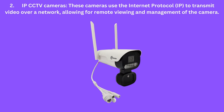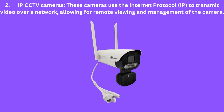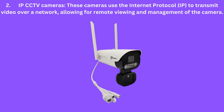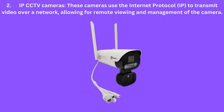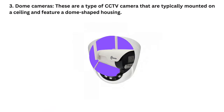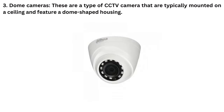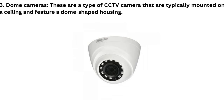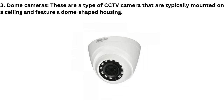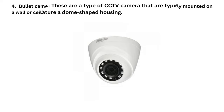2. IP CCTV cameras — these cameras use the Internet Protocol to transmit video over a network, allowing for remote viewing and management of the camera. 3. Dome cameras — these are a type of CCTV camera that are typically mounted on a ceiling and feature a dome-shaped housing.